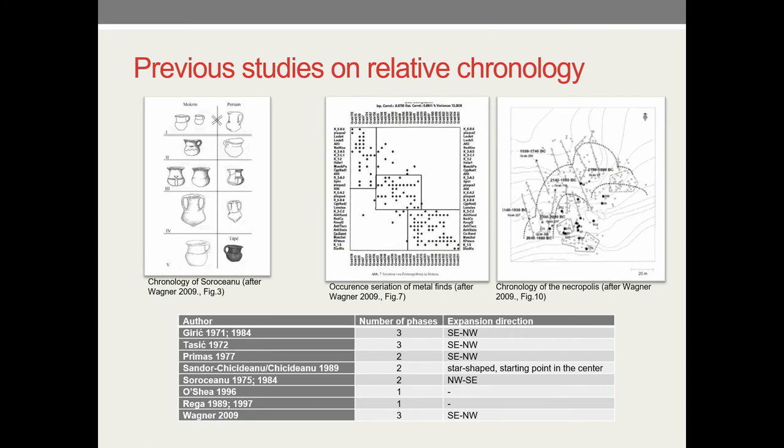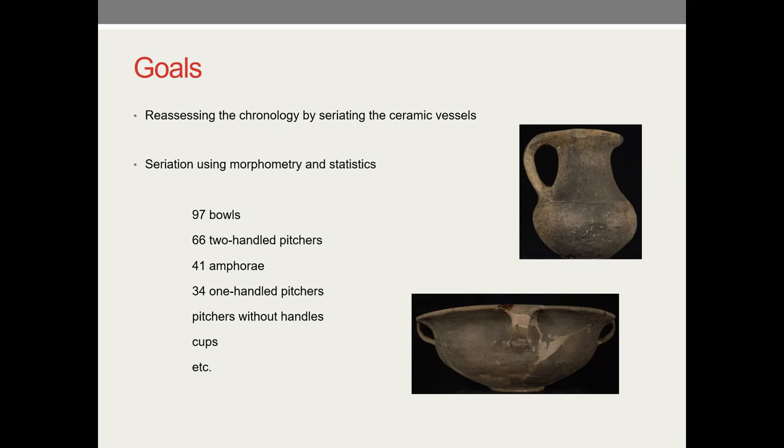The only quantitative studies done so far was by Wagner and she did the occurrence of metal finds from 30 or 40 graves I think. And concluded that the orientation, the spread of necropolis was from southeast to northwest as did most of the previous researches.